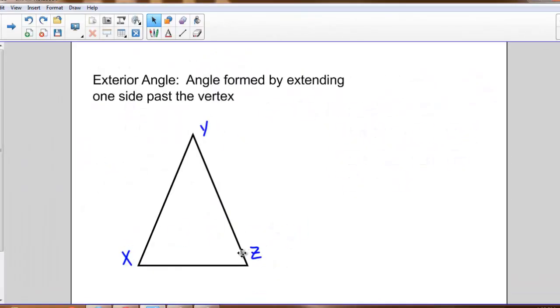If we can have interior angles in a triangle, it stands to reason that we could also look at exterior angles. Exterior angles are formed by extending one side past the vertex.